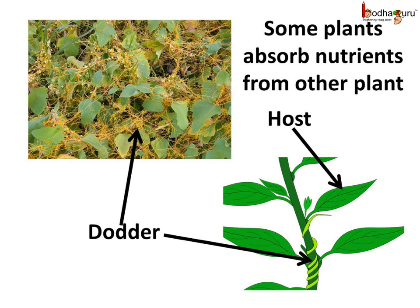There are a few plants which grow on other plants. The same way lice live and grow on our head and suck blood from the host body. Similarly, plants like Dodder and Rafflesia grow on other plants and absorb nutrients from the host's body. The Dodder plant covers woody plants and absorbs nutrients from the host, so the host suffers some damage.